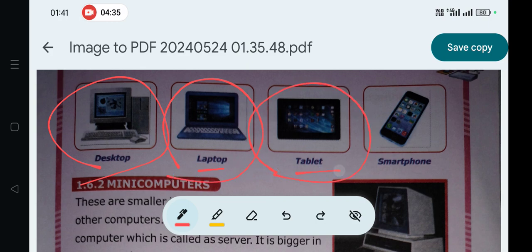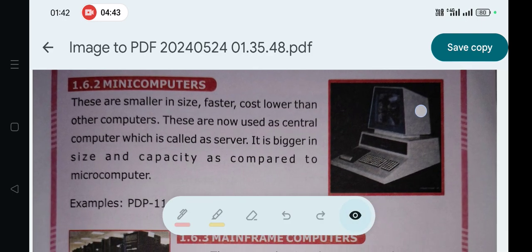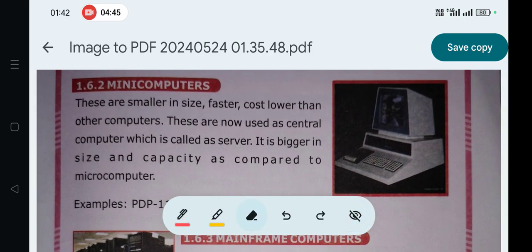Tablet, smartphone - you can mention smartphone only. These are the five types. You can also mention mini computer.